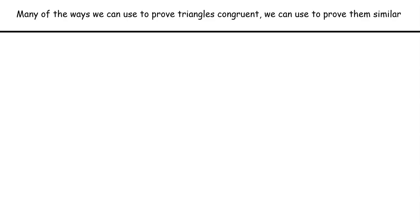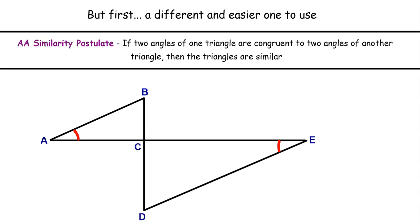This video will go through three common methods to prove triangles are similar, ask you to pause and write them down, give an example for each case, and take you through examples of determining which similarity postulate or theorem to use — including one specific circumstance that involves a little special attention. First, before familiar methods from congruence, we have one that's actually easier: if two angles of one triangle are congruent to two angles of another, that's enough to say the triangles are similar. Pause the video, copy down the postulate — called AA similarity — as well as the diagram below, and see if you can find the second congruent angle marked in the diagram.